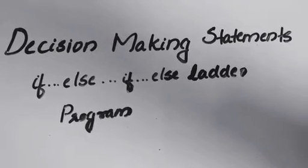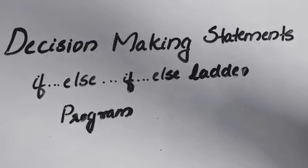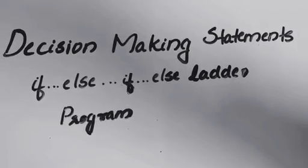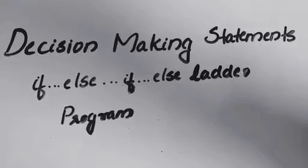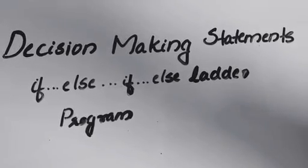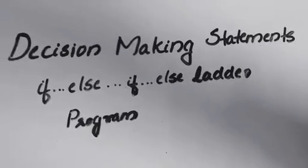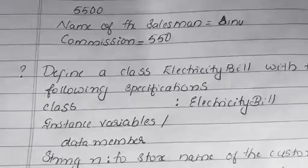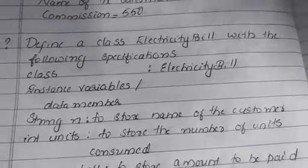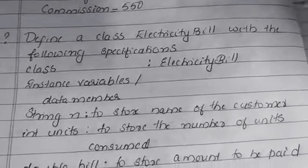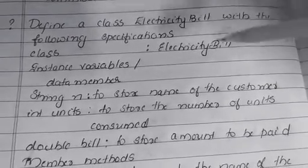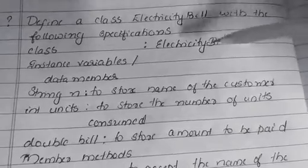Welcome back students. Today we are going to discuss a program based on decision making statements. This is a board exam question asked in your previous year. The question says: define a class ElectricityBill with the following specification, so the class name is ElectricityBill.